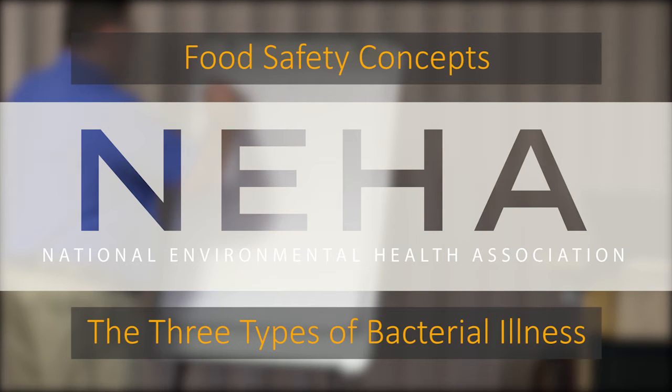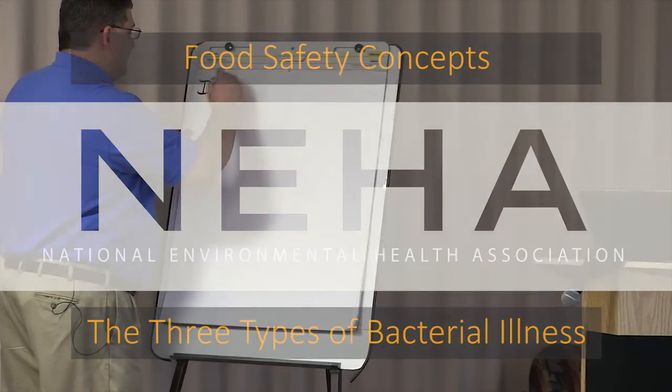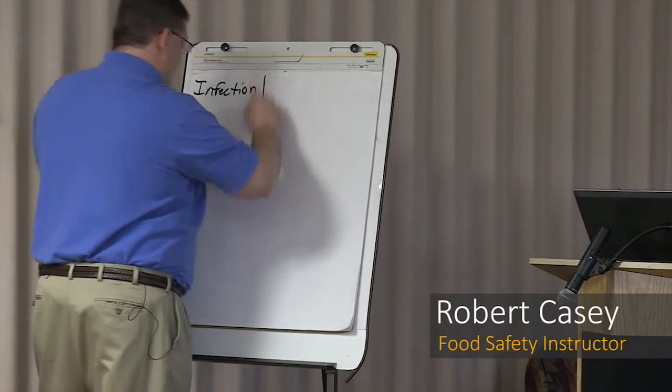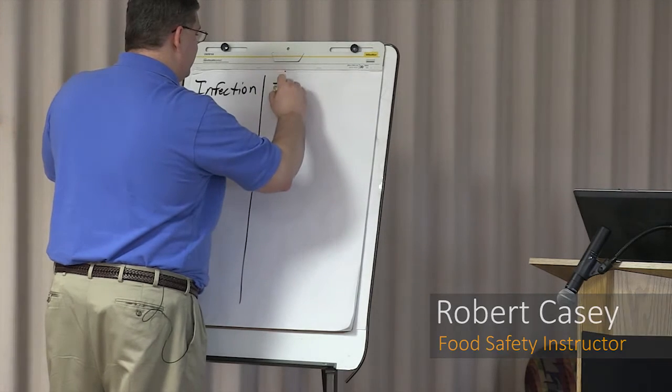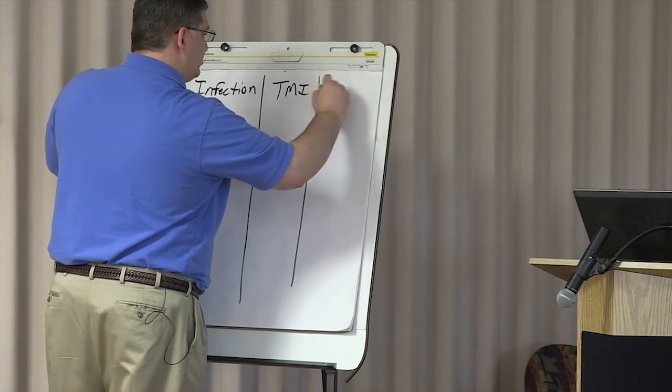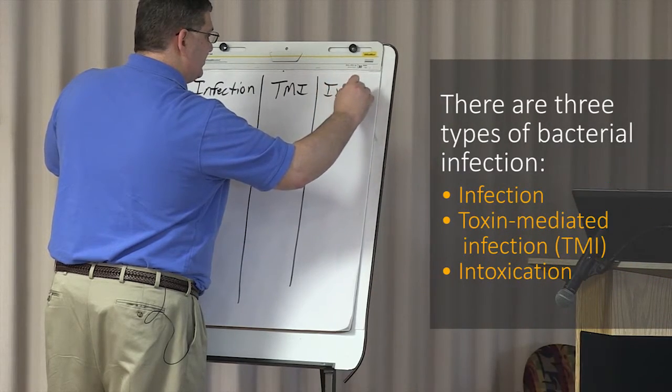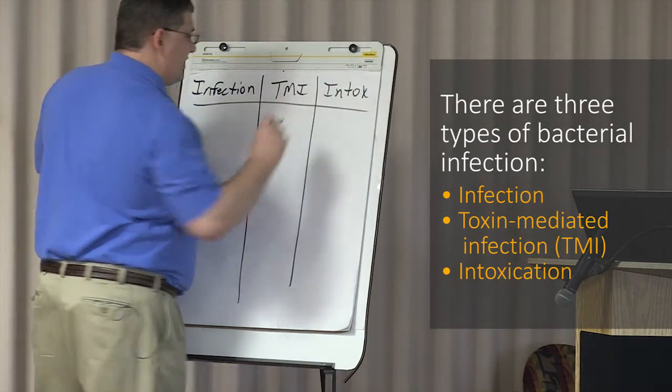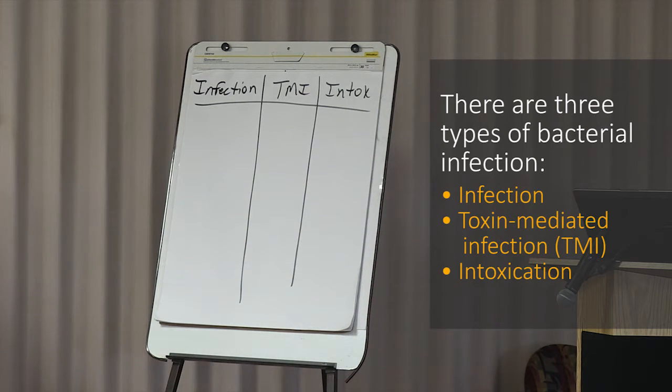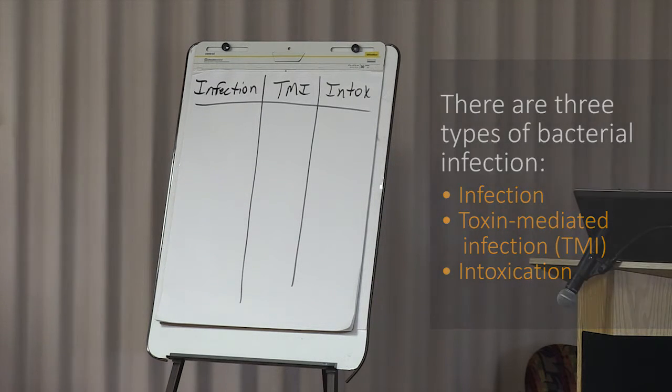So there are three kinds of bacterial illnesses. There's an infection, a toxin mediated infection, and then there's a straight intoxication. Now if you understand what causes each of these, there's a lot of other stuff that will flow naturally from knowing what causes it.